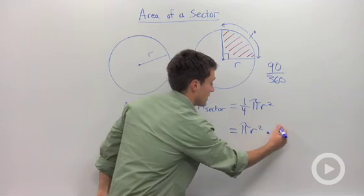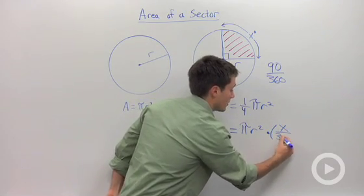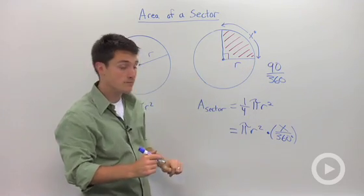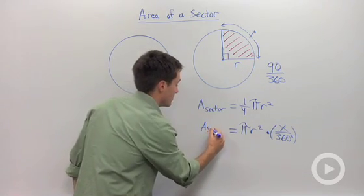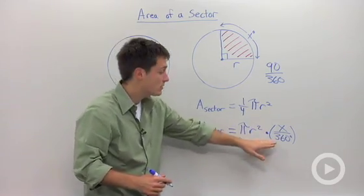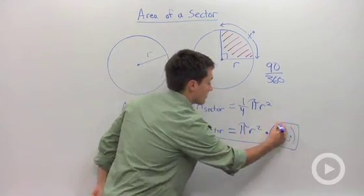So we're going to say this is times x out of 360, where x is the intercepted arc or the central angle. So the area of the sector is equal to the area of the whole circle times whatever fraction you're taking of that circle.